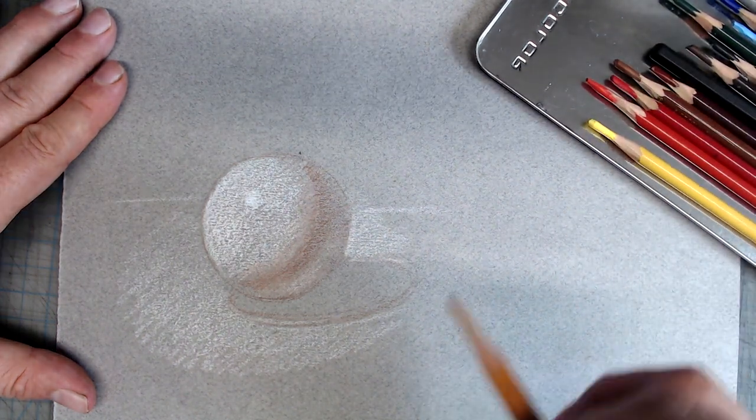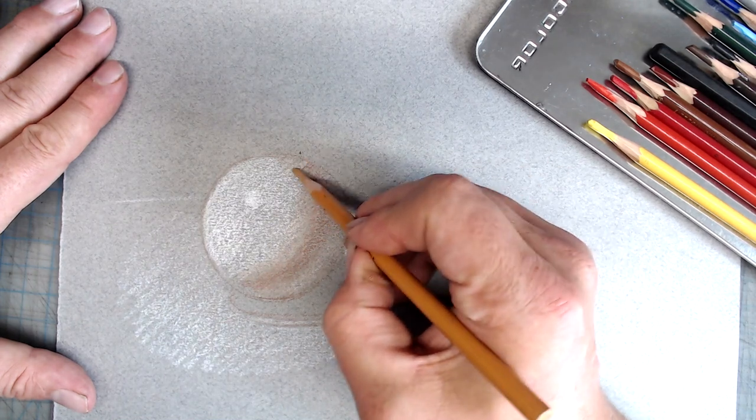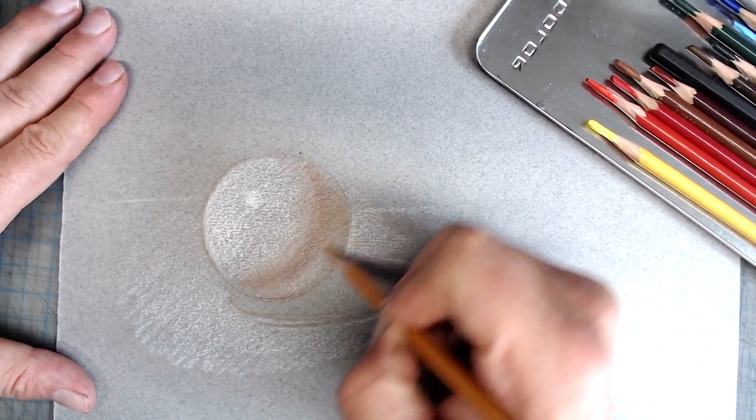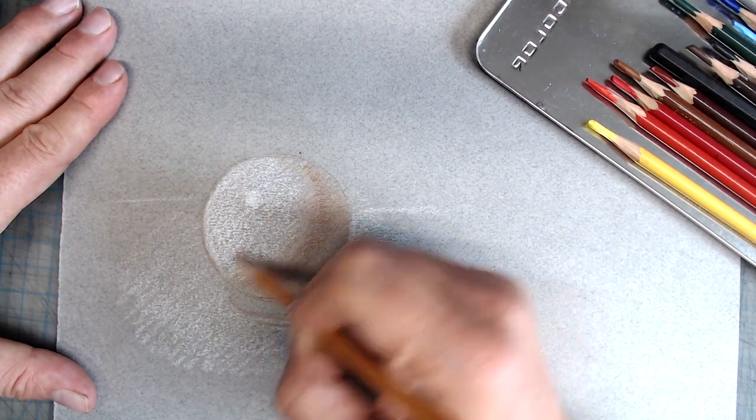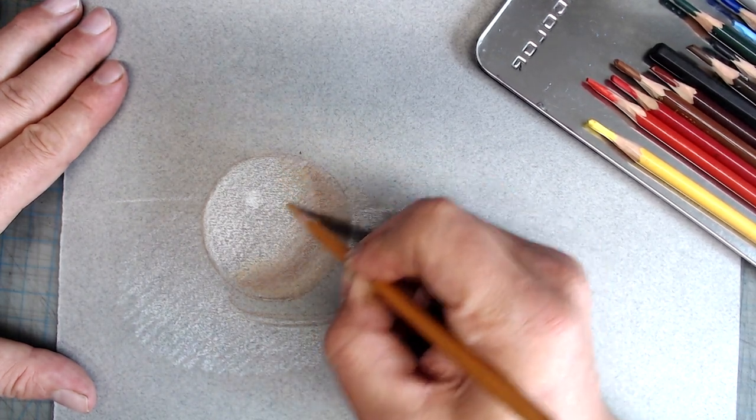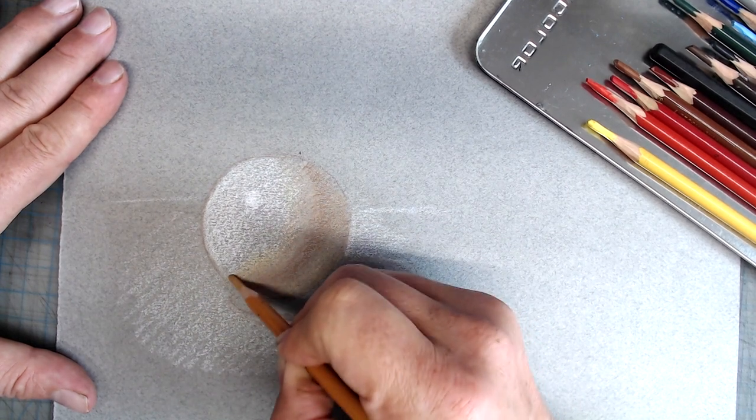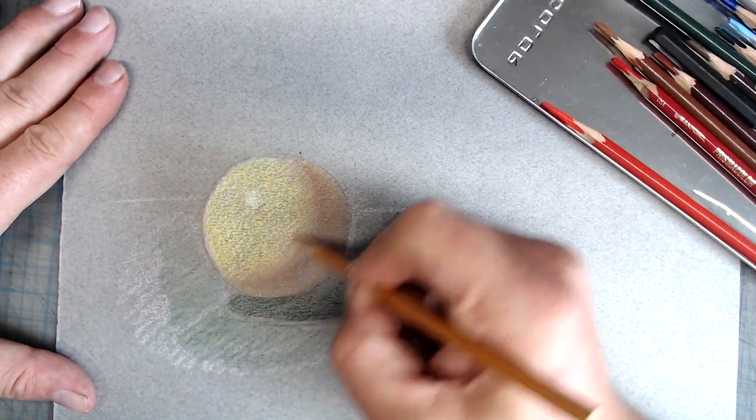Now that the form looks nice and round, I start to build up the color. I usually start in the shadow, and then switch to the lights. Again, because colored pencils are transparent, I think of this stage as akin to the glazing techniques used in oil painting. Since the monochrome underdrawing is providing the form, I don't have to think about it quite as much in the color stage.